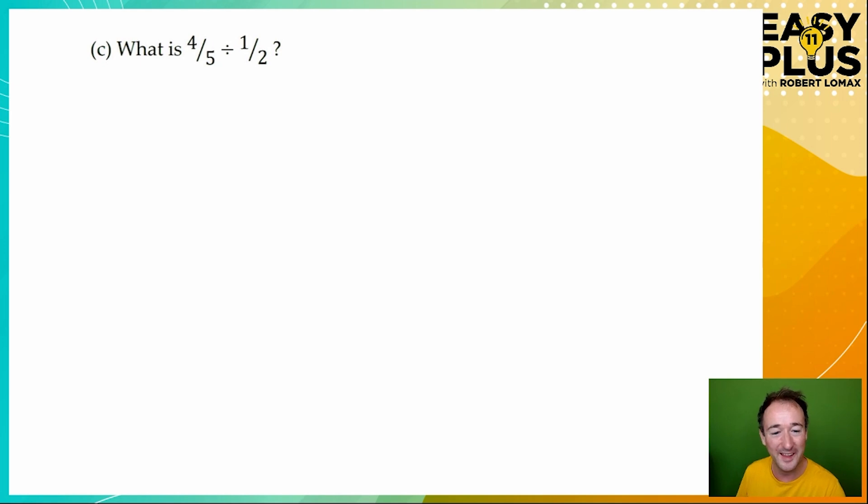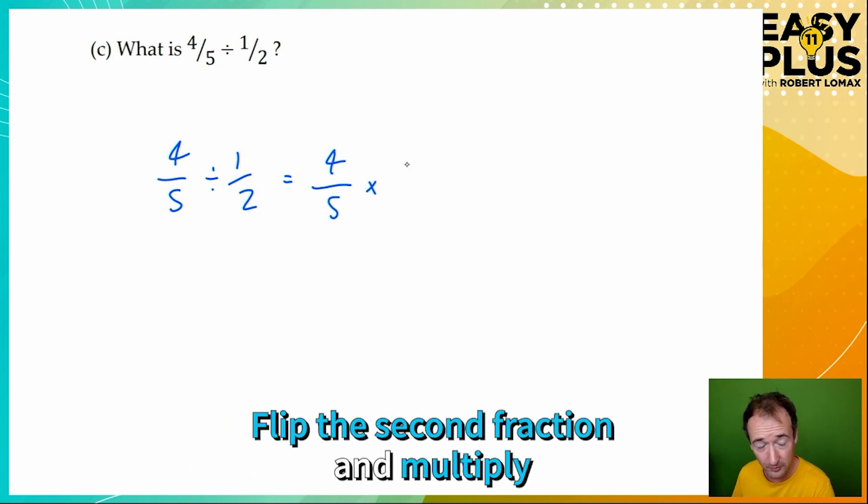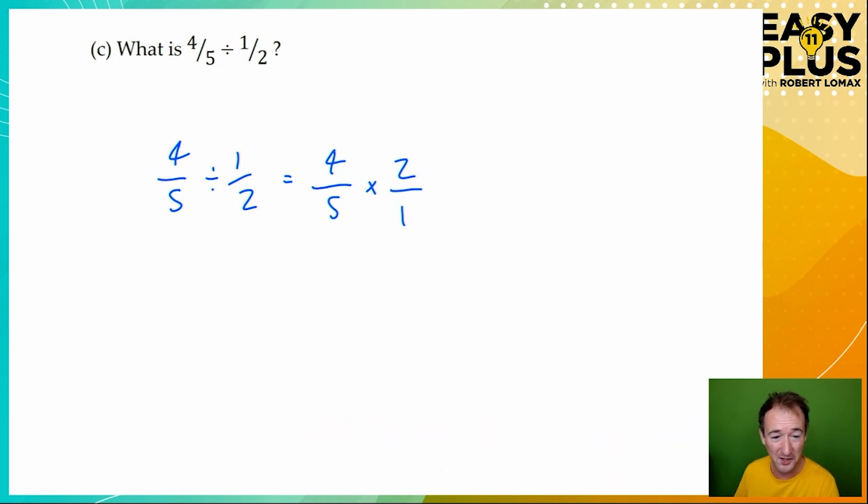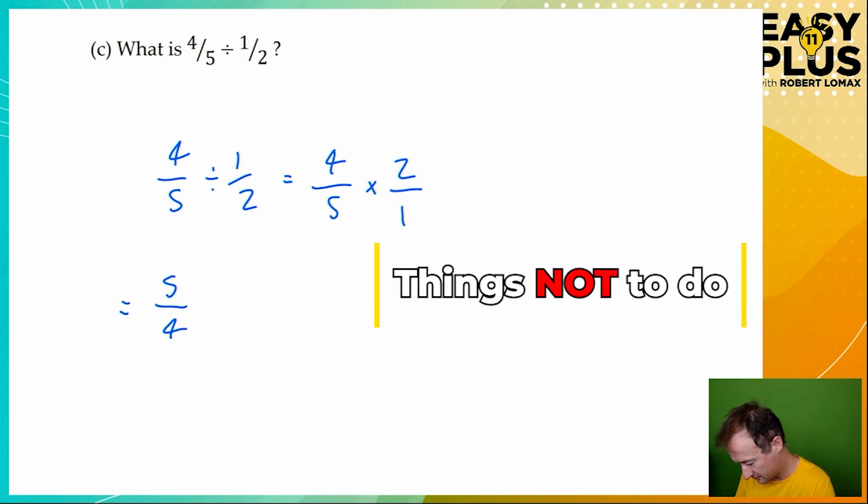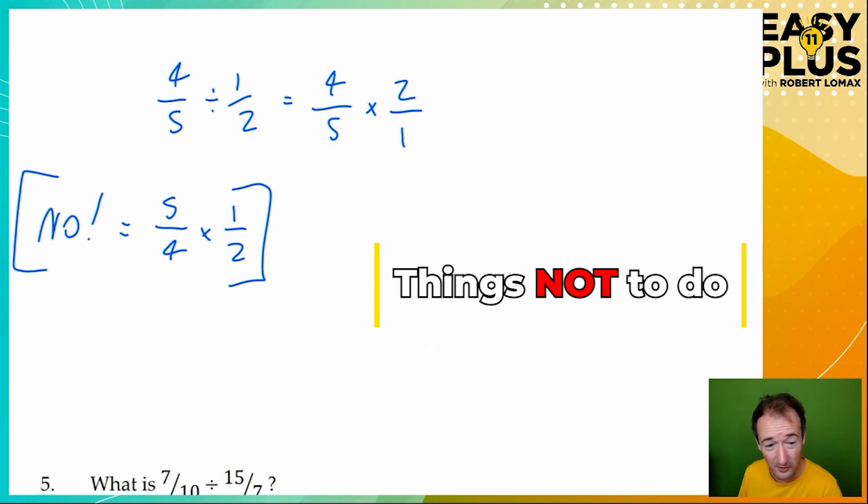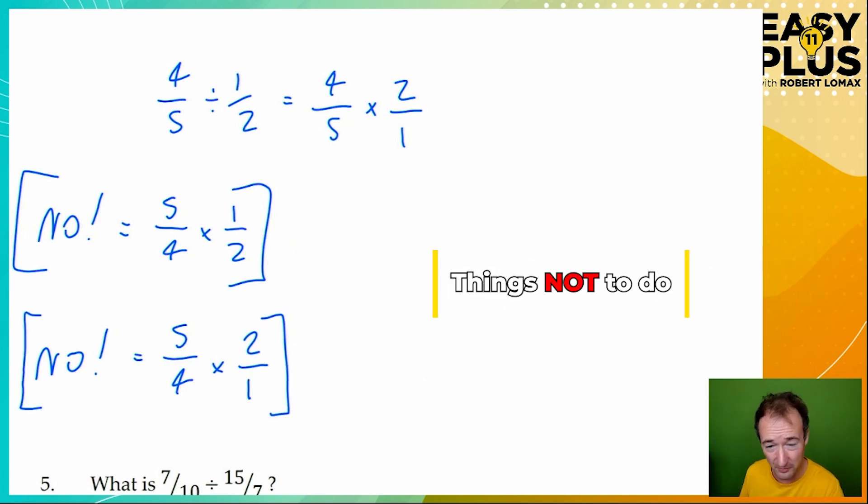Now let's try that method on a more exam-like pair of fractions. We've got four-fifths divided by a half, which is going to equal four-fifths times flip the second one over. Now remember, and this is really important, that you should not do one of these things. What have we done here? We've flipped over the first fraction instead of the second fraction. That's wrong. Another thing you shouldn't do is flip them both over.